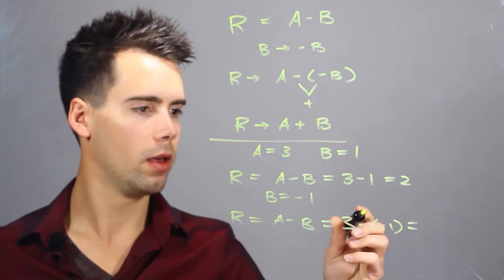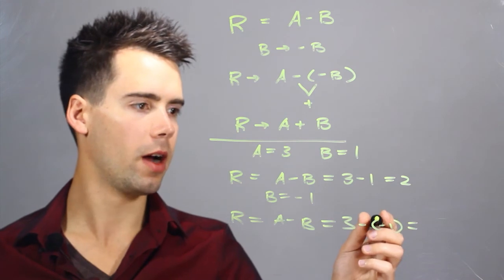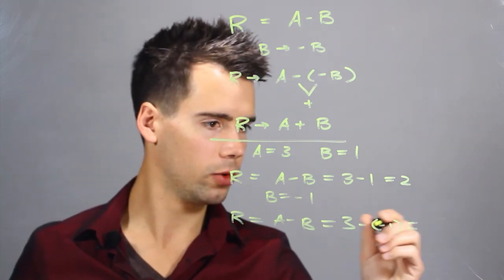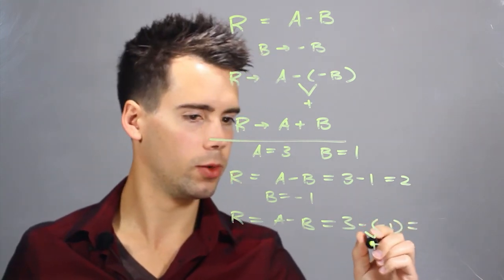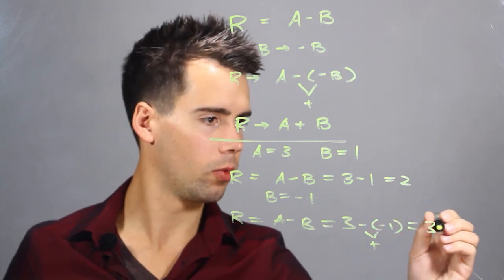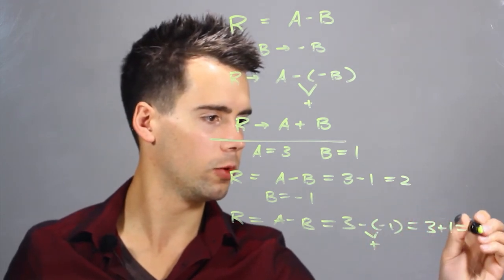And using our rule above, a negative in front of a minus is equal to a plus. So we find that R is actually equal to 3 plus 1, which is equal to 4.